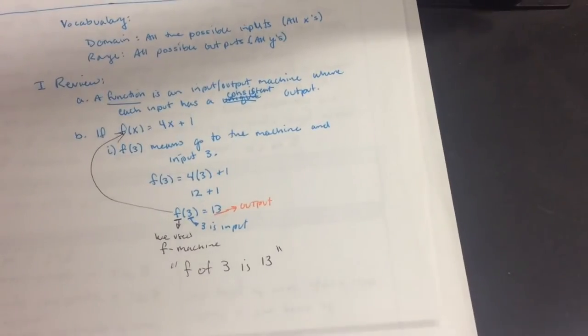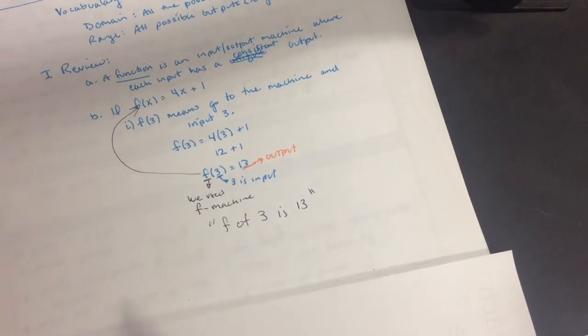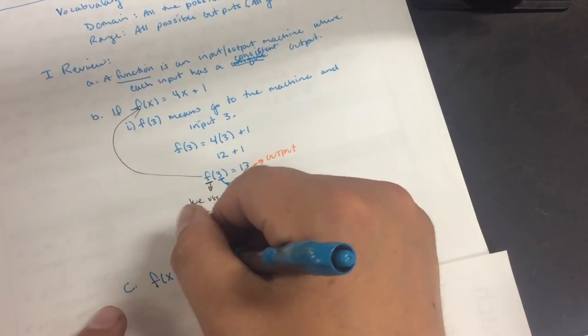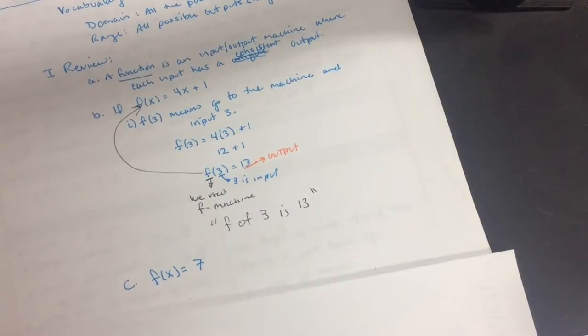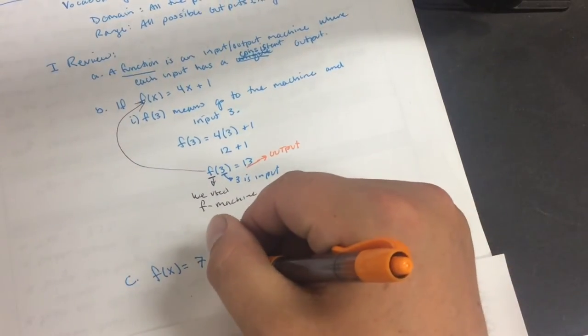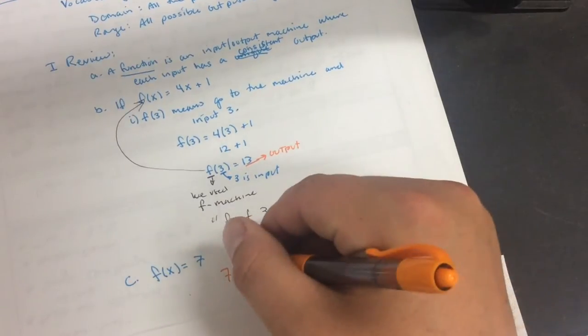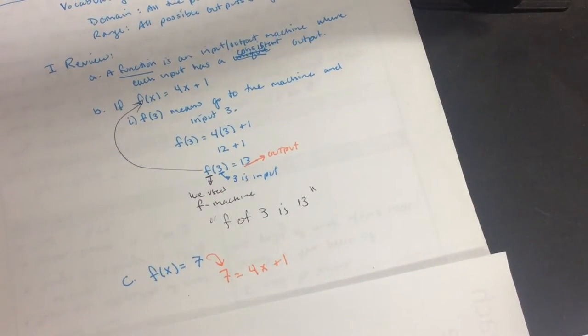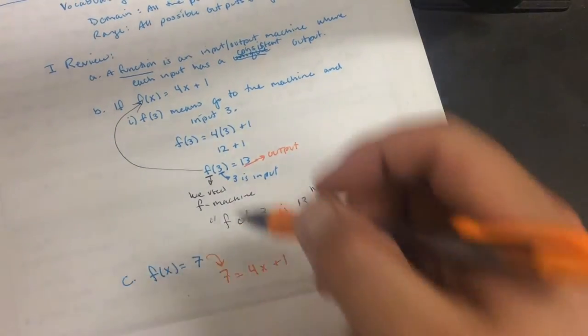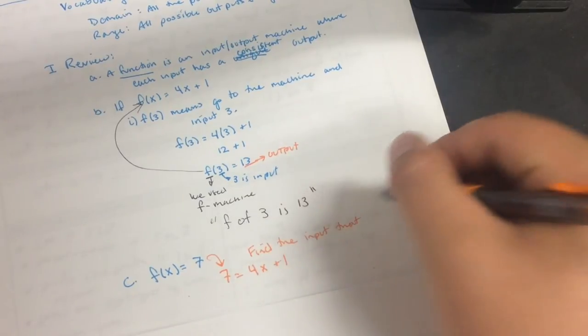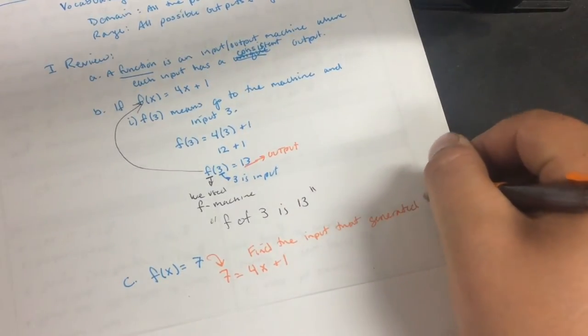The other things that we might see is what do we do when we're given f of x equals 7. So what we do for this when it's telling us f of x equals something, we replace it as the answer. So we say 7 equals 4x plus 1. The 7 becomes the answer. It is the output.